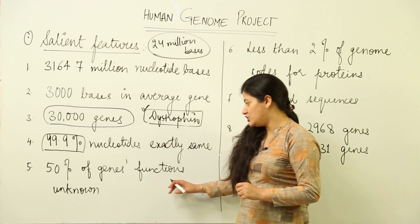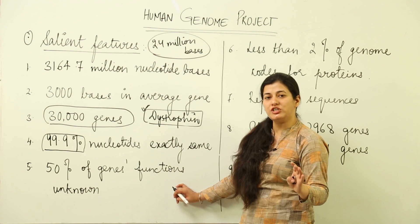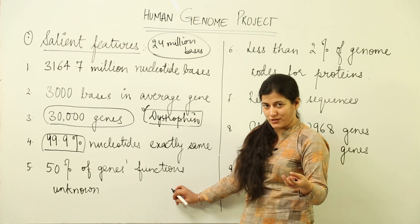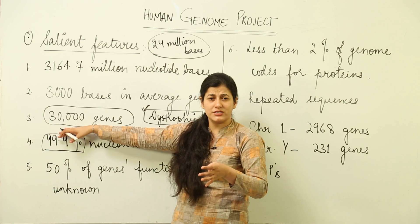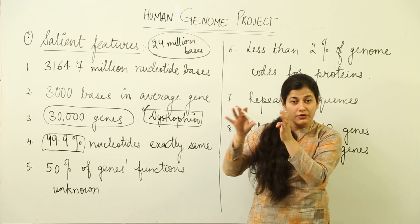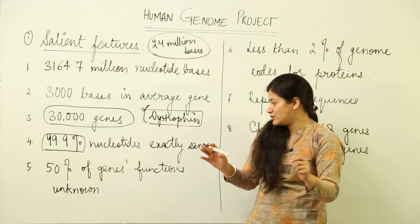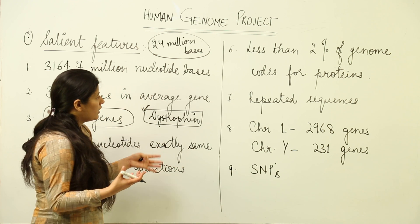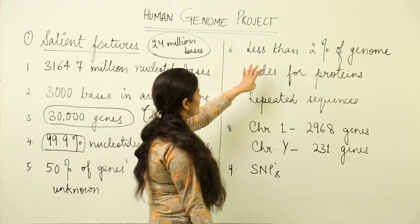The next salient feature is that 50% of the genes which have been discovered have an unknown function. Out of approximately 30,000 genes, only 15,000 are known in terms of what function they perform. The remaining 50% — we don't yet know what function they serve. This is a salient feature, though it also reflects a current limitation in our knowledge.